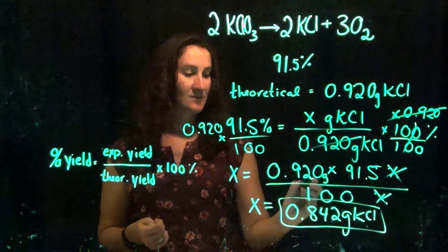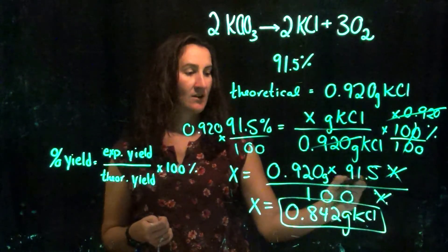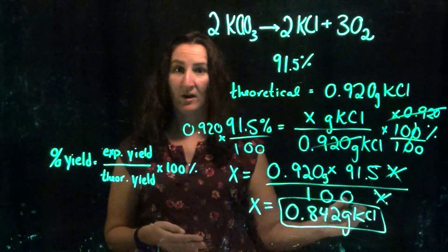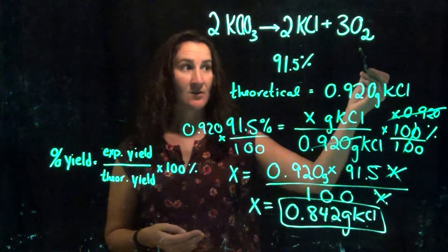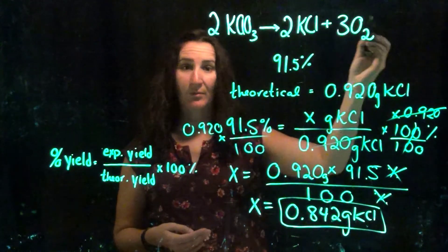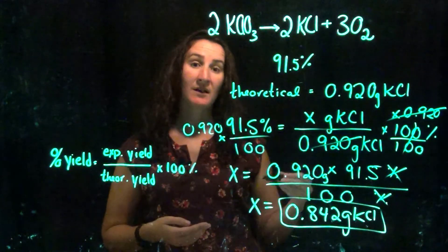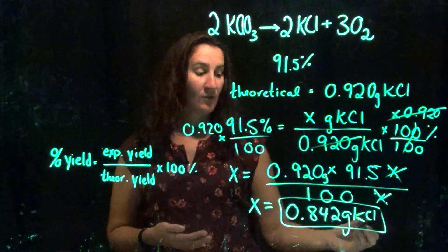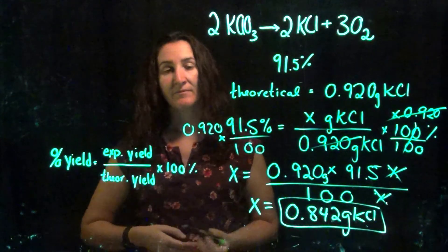Make sure you check your sig figs. It's 3 because of the 3 sig figs here, 3 sig figs here, and then my units are grams. Grams of what? KCl. Because notice, I could have also solved for this other product and asked, what is my theoretical yield of oxygen, or something like that. So make sure you include the entire unit.